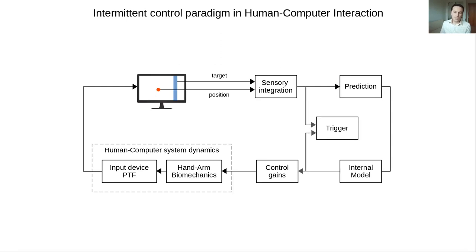The internal model produces an ideal version of our system's state that is compared against the current state. And the trigger decides when to open or close the feedback loop based on this difference, bringing intermittent behavior into the model.